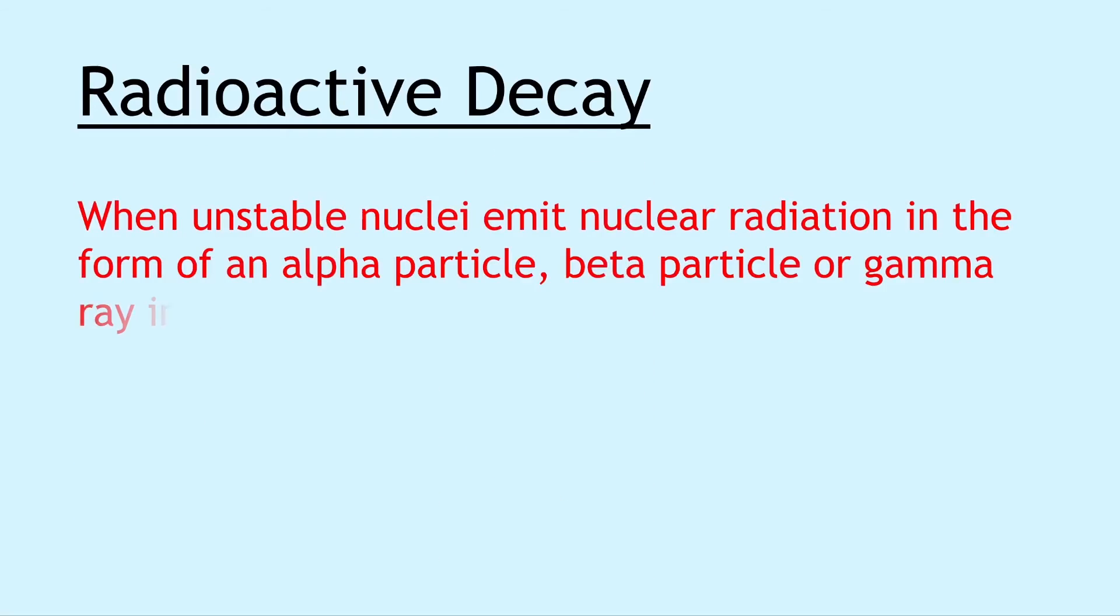Moving on, we have radioactive decay, which is when unstable nuclei emit nuclear radiation in the form of an alpha particle, beta particle, or gamma ray in an attempt to become more stable.